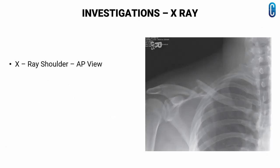The diagnosis is confirmed by X-ray of the affected shoulder, anteroposterior view. Here, you can see there is a displaced fracture at the junction of the medial two-thirds and lateral one-third of the clavicle.